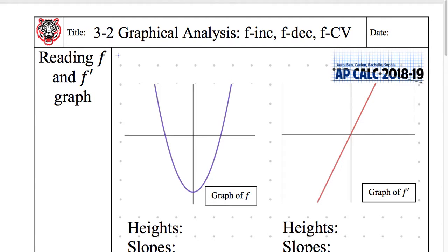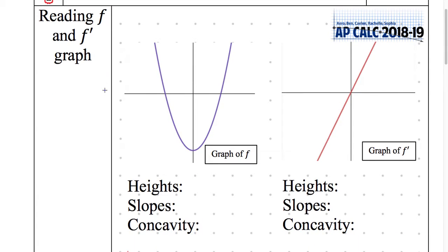Reading a graph of F and F prime. When we look at this graph of F, and I do have them labeled here, blue is F, F prime is red. Just reviewing from yesterday, heights. What are heights on here? Is it F, F prime, F double prime, undoing of F? What is heights? Just F.